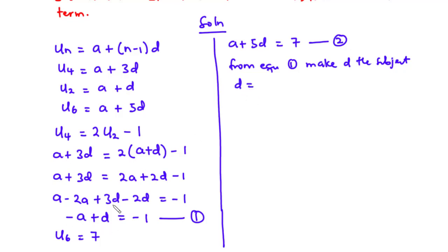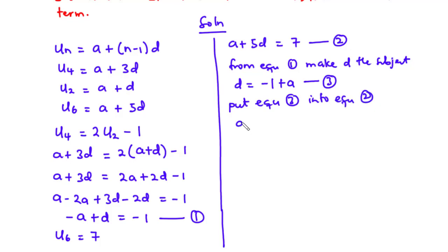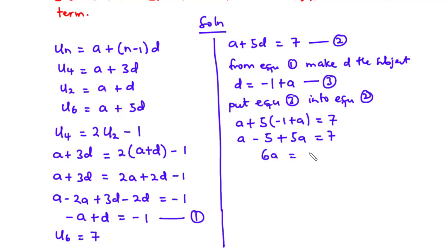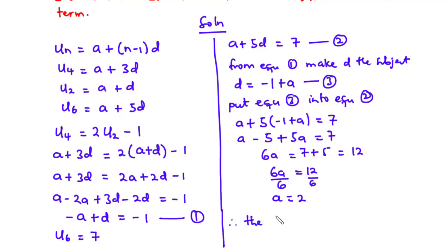From equation 1, d = -1 + a. Call this equation 3. Substituting equation 3 into equation 2: a + 5(-1 + a) = 7, so a - 5 + 5a = 7, giving 6a = 12. Dividing by 6, a = 2. Therefore, the first term is 2.